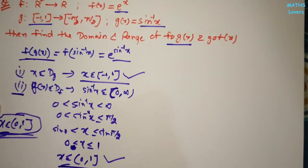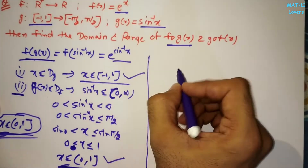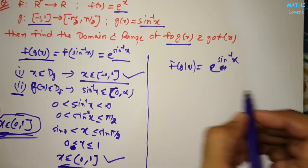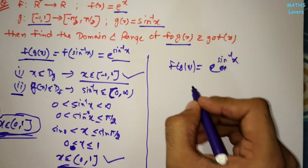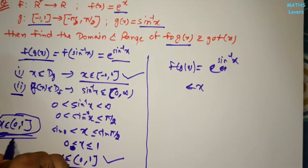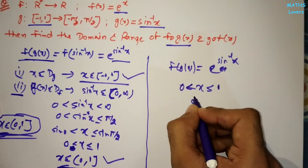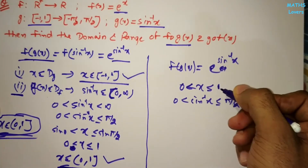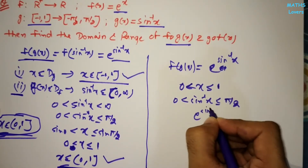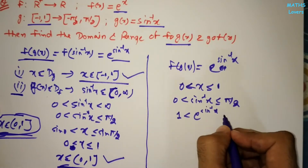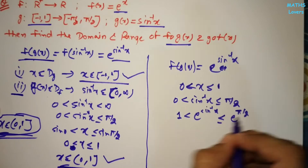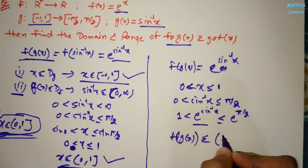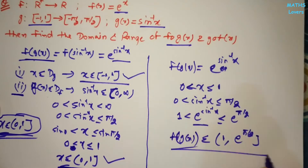For the range: f(g(x)) = e^(sin⁻¹x), which is an increasing function. With x ∈ (0, 1], sin⁻¹x ranges from 0 to π/2 (since sin⁻¹1 = π/2). So e^(sin⁻¹x) ranges from e^0 = 1 to e^(π/2). The range of f(g(x)) is [1, e^(π/2)].